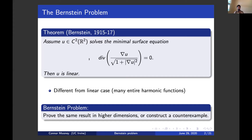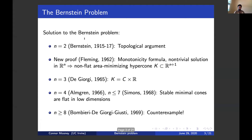The Bernstein problem asks whether the same result can be extended to higher dimensions — whether you can change this number 2 to n with arbitrary n. In the first part of the talk, I'd like to briefly review the solution of this problem, which is completely solved, and then discuss some extensions to related equations. The solution to the Bernstein problem was first proved in two dimensions by Bernstein in 1915, and his original proof is extremely interesting. It's based on the restrictive topology of R2.